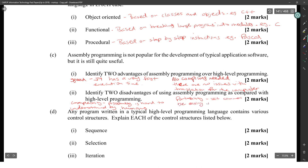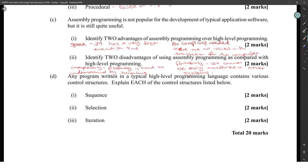Any program written in a typical high-level programming language contains various control structures. Explain each of the control structures below. Sequence is step-by-step instructions. Example: get a, get b, c equals a plus b.